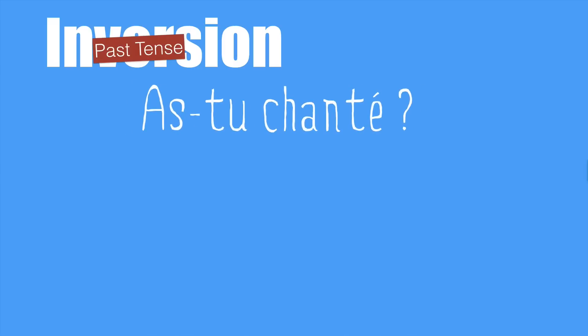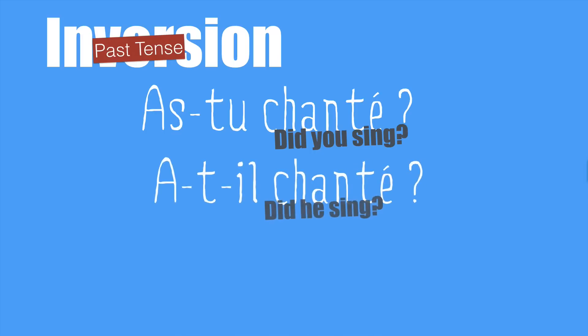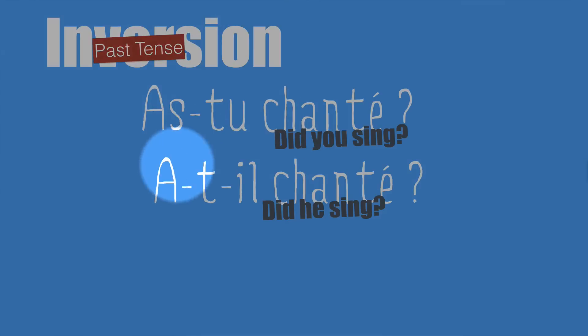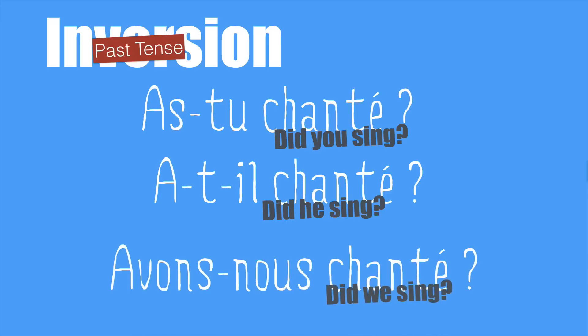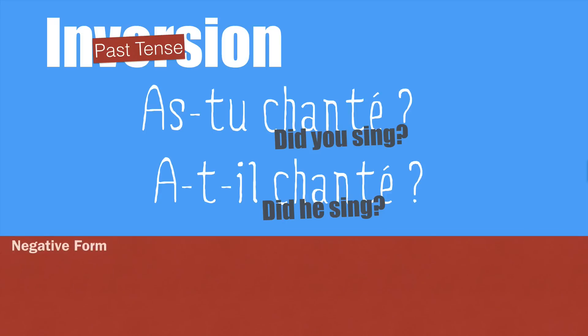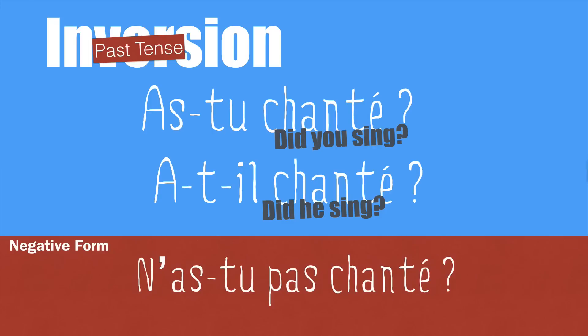The past tense now — a passé composé question. 'As-tu chanté?' — Did you sing? And again, the same meaning as 'est-ce que tu as chanté?' 'A-t-il chanté?' — Did he sing? And because we've got two vowels here, you also need the T between — don't forget the two hyphens — 'a-t-il chanté?' 'Avons-nous chanté?' — Did we sing? And the negative form is 'N'as-tu pas chanté?' — Did you not sing?